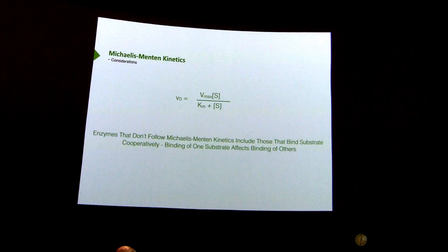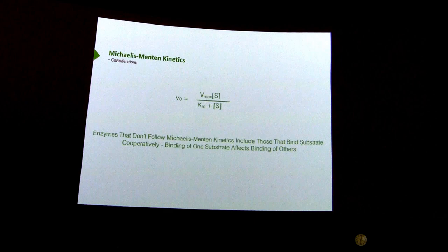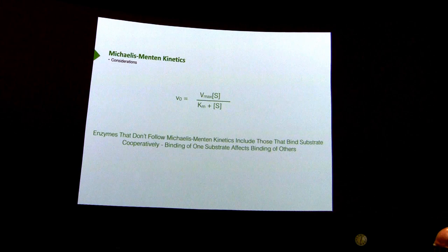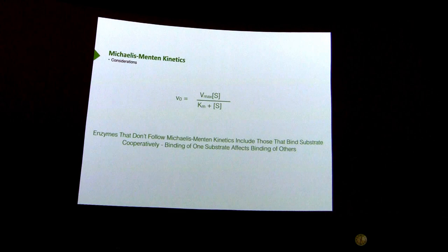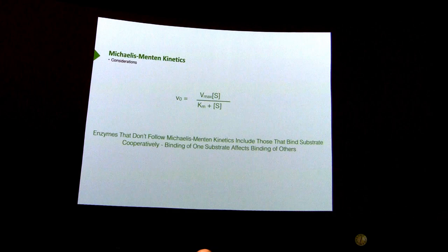After doing a bunch of derivations, we arrive at what's called the Michaelis-Menten equation. I'm showing it to you — you won't memorize it and we won't do calculations — but I want to expose you to it. It says that V0, the initial velocity at any substrate concentration, can be predicted if you know Vmax and Km. I'm not interested in the equation itself; I'm interested in your understanding of the parameters: Km, Vmax, the real-world analogies, and how they play together.